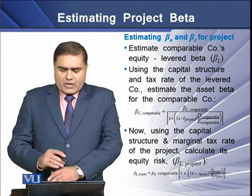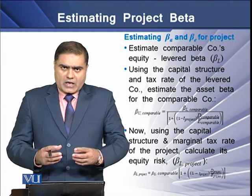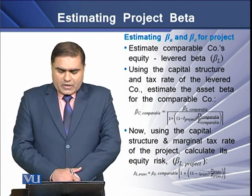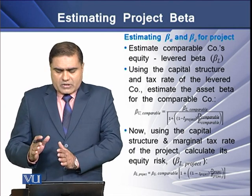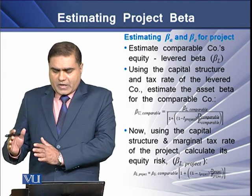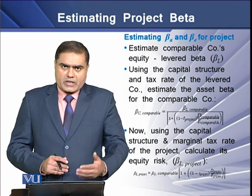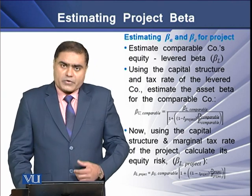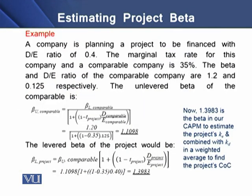Third, when we have the unlevered asset beta, we use the capital structure and marginal tax rates of the particular project in order to calculate its own equity risk, or the equity beta, which will be known as the project beta. We have an example for understanding this computation of project beta.